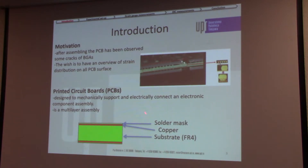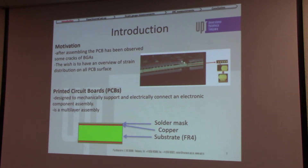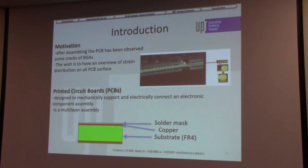PCBs are mainly designed to support and connect an electronic component assembly and are made from multiple layers. A double-sided PCB is formed from a substrate of FR4 epoxy glass and two layers of copper. The PCB used in my case is formed from 11 stacked layers laminated together with heat and adhesive.